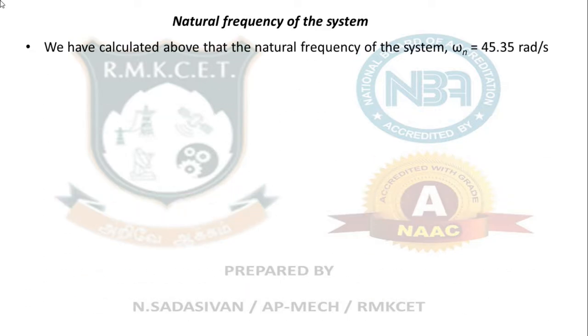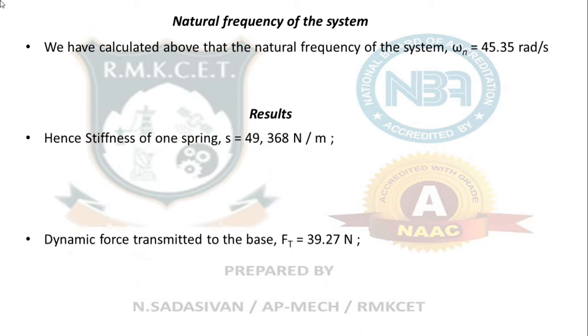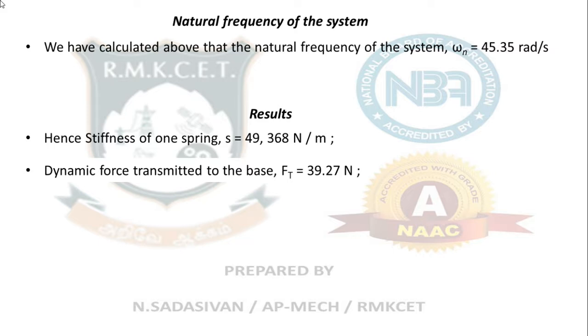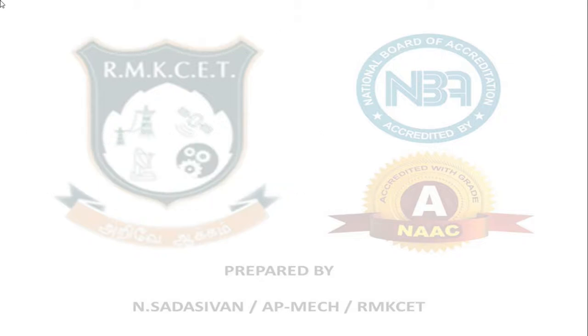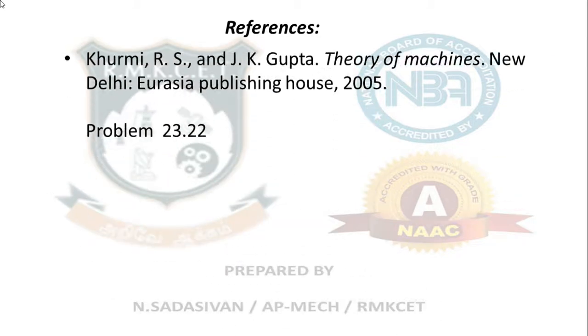Last question: natural frequency of system. That you have already found out, 45.35 radians per second. So you do not have to do it again. Results: the stiffness of 1 spring is 49,368 Newton per meter, dynamic force transmitted to the base is 39.27 Newton, natural frequency of system is 45.35 radians per second. That completes the problem, it is taken from your Kurmi textbook 23.22.